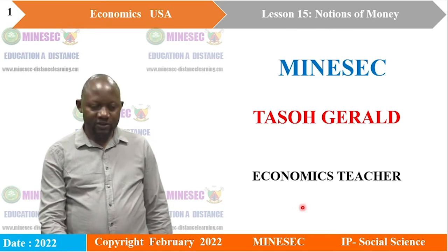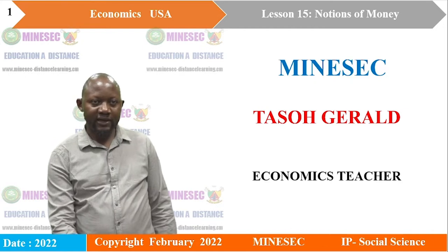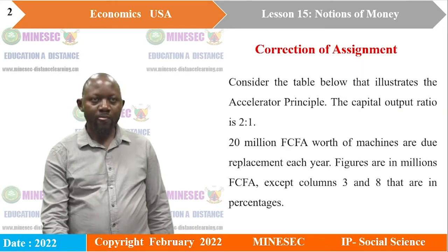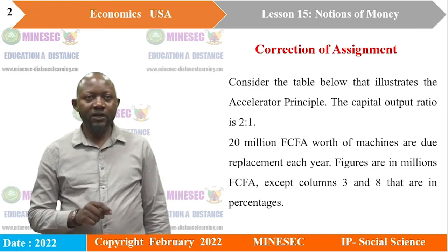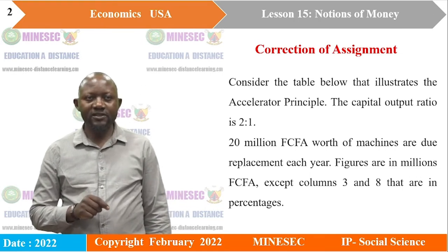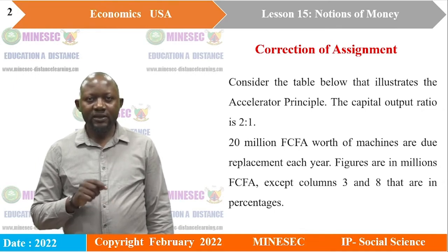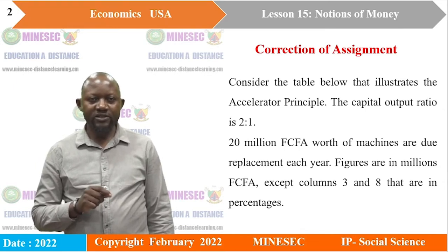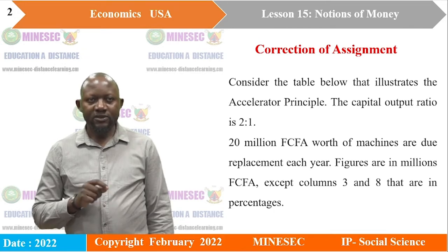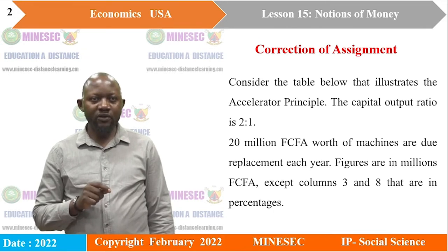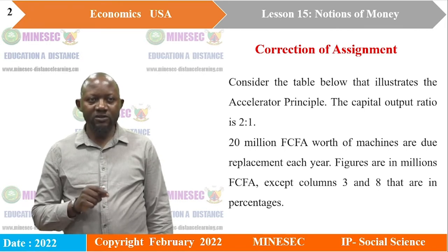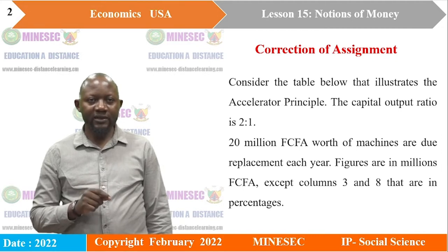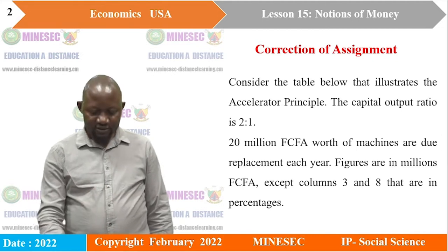Before we continue with this session, we are going to look at the assignment we had in the last session. This was the assignment: consider the table below that illustrates the accelerator principle. The capital-output ratio is 2:1, and 20 million francs CFA worth of machines are due for replacement each year. Figures are in millions of francs CFA except columns 3 and 8, which are in percentages. Let's look at the table.